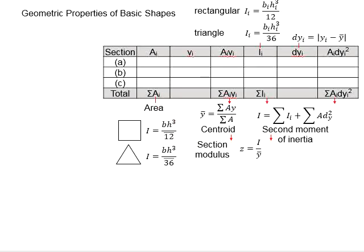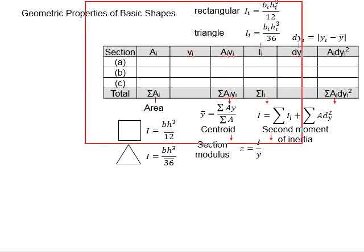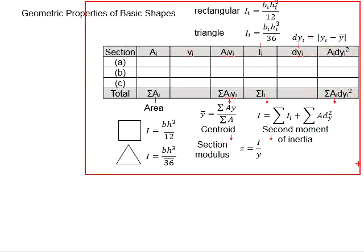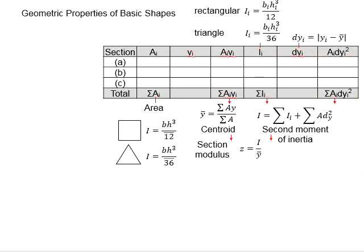In this slide, the steps to determine the geometrical property of the sections are shown. The geometrical properties of the sections include the area of the cross-section, the centroid of the cross-sectional area, the second moment of inertia, and also the section modulus.